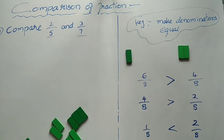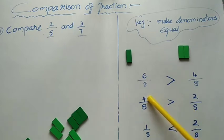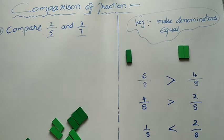One thing to remember: when the denominator is the same, we can compare the numerator directly. If the numerator here is 4, it is the bigger one, so I put the greater than symbol. When denominators are the same — both 8 — and numerator here is 1 and here is 2, since 1 is lesser, I keep the less than symbol. For the symbol: the open side points to the bigger number and the vertex points to the smaller number. I think everybody got a brief idea about the comparison of fractions.